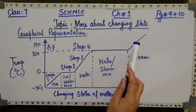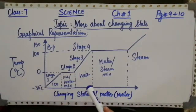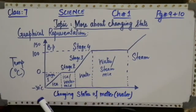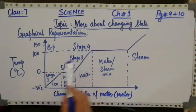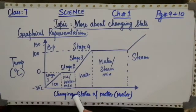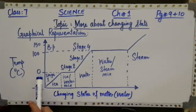More about changing state can be represented in the form of a graph. This graph shows the result of the investigation. There are four stages you can see here: Stage 1, Stage 2, Stage 3, and Stage 4. Stage 1 represents the heat energy raising — that is, increasing the temperature of the ice up to 0 degrees Celsius, which is the melting point of water.